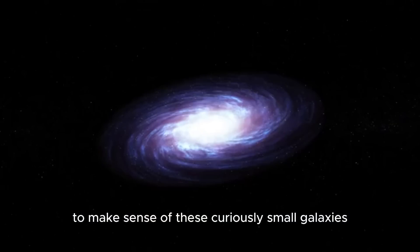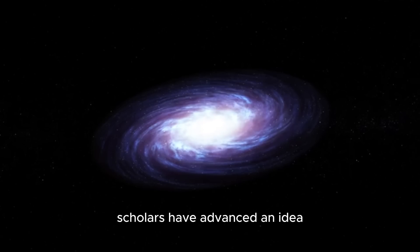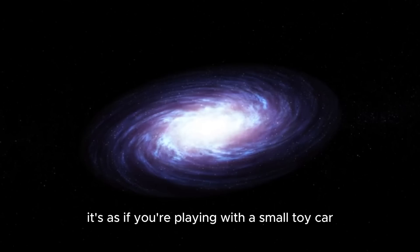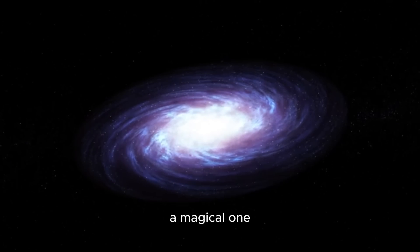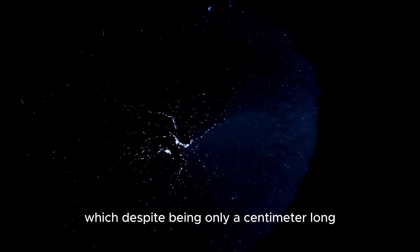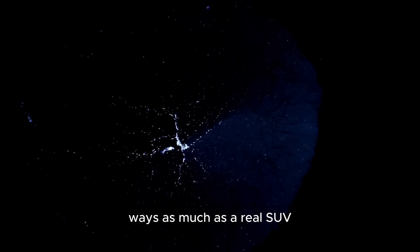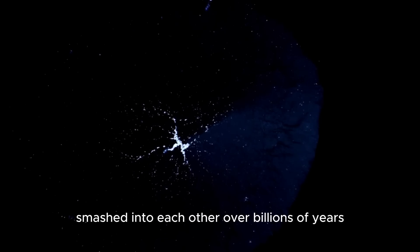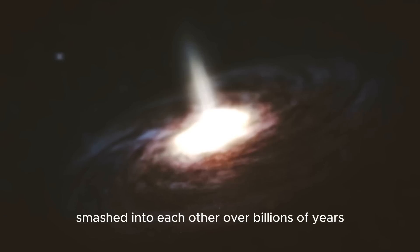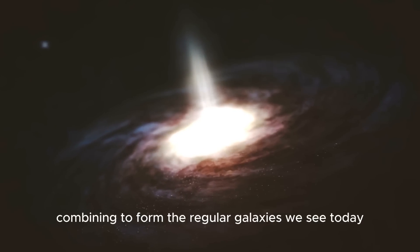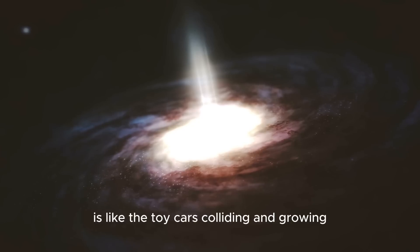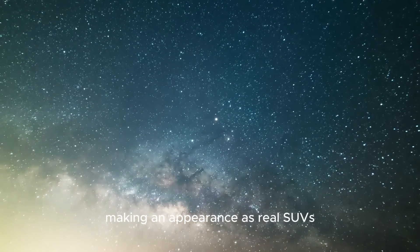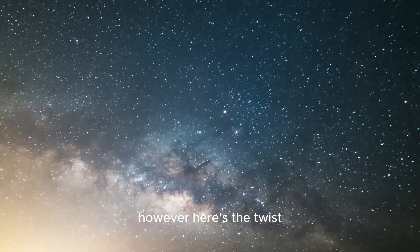To make sense of these curiously small galaxies, scholars have advanced an idea. It's as if you're playing with a small toy car, a magical one, which despite being only a centimeter long, weighs as much as a real SUV. They suggest that these miniature galaxies smashed into each other over billions of years, combining to form the regular galaxies we see today. It's like the toy cars colliding and growing, making an appearance as real SUVs. However, here's the twist.